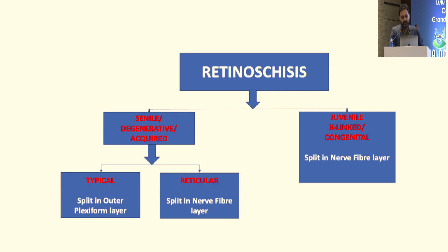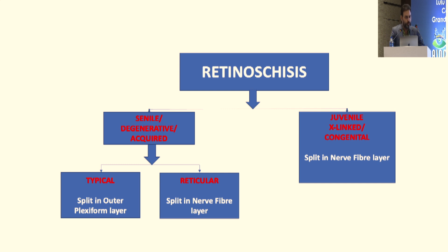When you talk about retinoschisis — typically non-tractional retinoschisis — you have X-linked or congenital retinoschisis, but also senile. The main difference between senile and X-linked retinoschisis (XLRS) is that the split is in the outer plexiform layer. However, there is a rarer subtype of senile or acquired retinoschisis which is bullous in appearance but called reticular, because the split is more superficial — in the same layer as in X-linked retinoschisis.